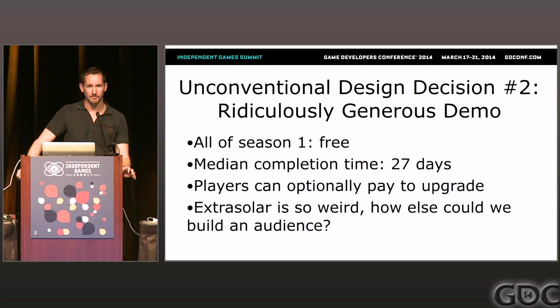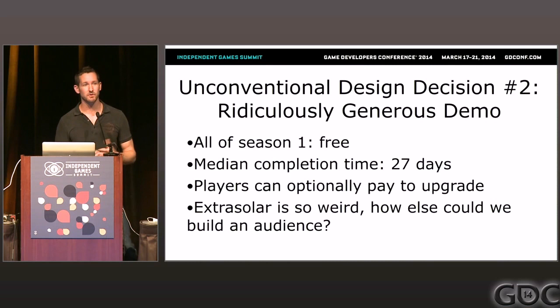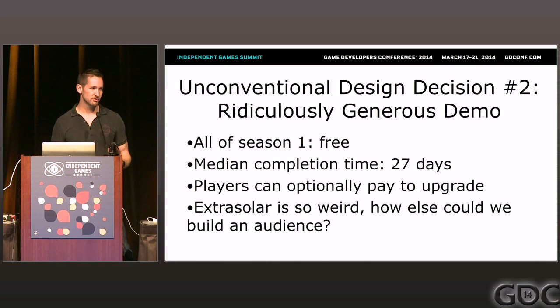Unconventional design decision number two is our ridiculously generous demo. Partly because ExtraSolar is such a weird and unusual experience, it's very hard to sell up front, so we decided the only way to build an audience was to give away all of what we're calling Season One for free. It's not a small amount — about 250 pages of written content — and on average it takes a player 27 real-time days to complete it. Players can optionally pay to upgrade, but if you don't, you still get the entire story; you can just play a little faster if you pay.